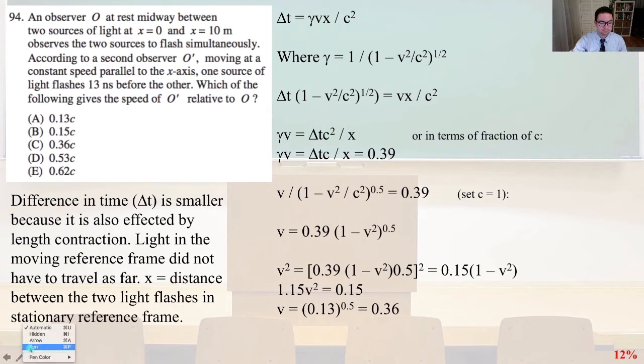So delta T, gotta get the pen ready. Delta T equals gamma Vx divided by C squared, where gamma equals 1 over the quantity, 1 minus V squared over C squared, that quantity square root. And so I like to think about it like this, where the time difference, you have a time difference because of time dilation, which is where that comes from. But then that time dilation, the light in the moving reference frame is also moving in a shorter amount of space because of length contraction. And so that's where the gamma comes in, or in terms of a fraction of C, the speed of light, gamma V equals delta Tc over x equals 0.39.